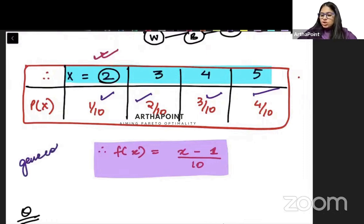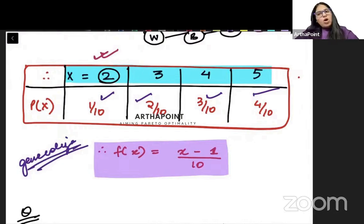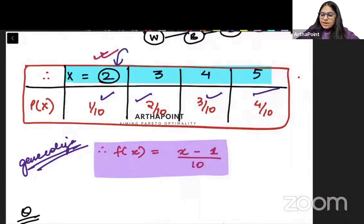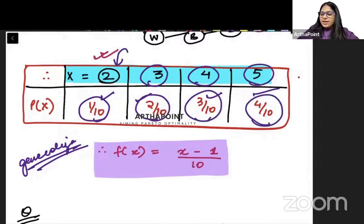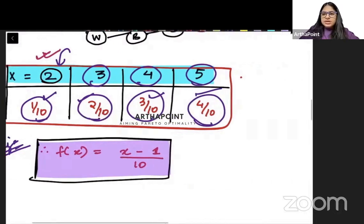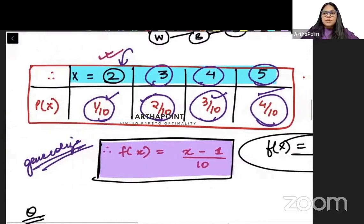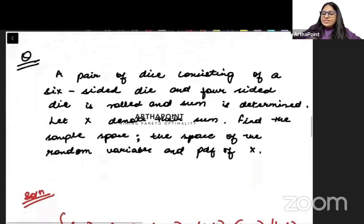Suppose in the exam they ask you to generalize this. Can you see some pattern here? When X=2 we get 1/10, when X=3 we get 2/10, when X=4 we get 3/10, and when X=5 we get 4/10. So if I were to generalize, the probability density function f(x) becomes (x−1)/10. This is how we can generalize this result.